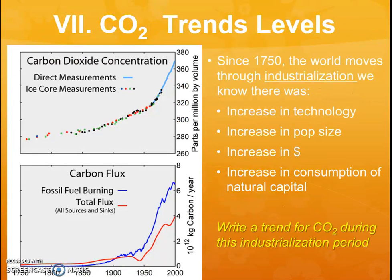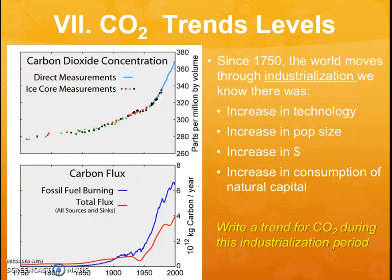What we're finding, especially for CO2 as our major focus, is that since industrialization after 1750, increasing technology, population size, more consumption of natural resources — we see an increase in CO2 in the graph that follows industrialization. As of right now we are over 400 parts per million, and this graph is old — we are beyond that. A lot of that has to do with fossil fuel burning coming along with all of these changes.